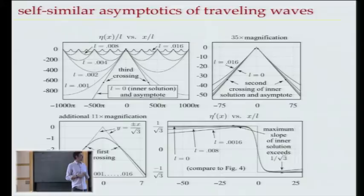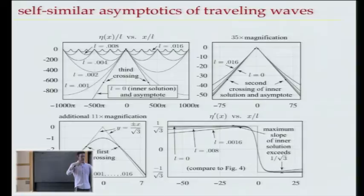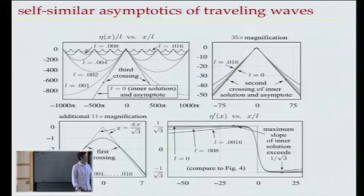Instead of holding the wavelength fixed and letting the crest sharpen to a corner, what they did is hold the curvature of the crest fixed and let the wavelength go to infinity. In this picture I show several different wavelengths, multiplied by two each time, showing how these solutions collapse onto the inner expansion of Longuet-Higgins and Fox. They found that the solution actually crosses the 120-degree asymptote infinitely often — there's this oscillatory approach to the corner wave, which nobody expected until they did this work.